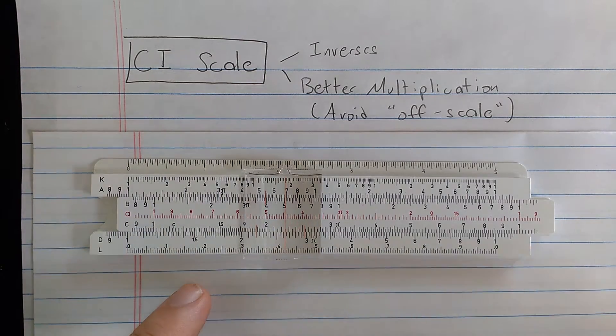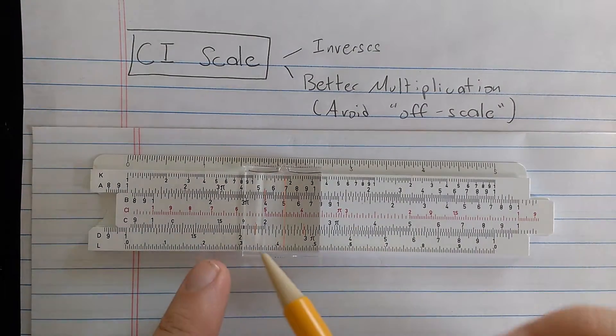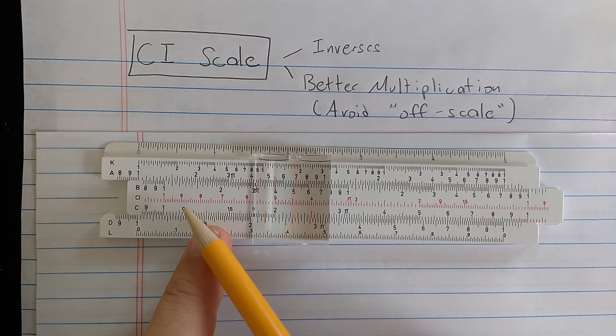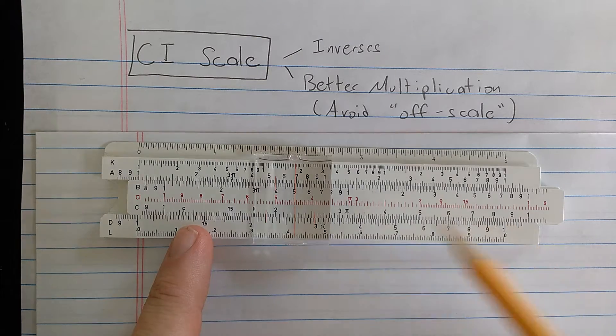CI is one of them. You'll notice CI here is in red. Some slide rules have the standard that if a scale is in red then the numbers decrease as you go to the right instead of increase.